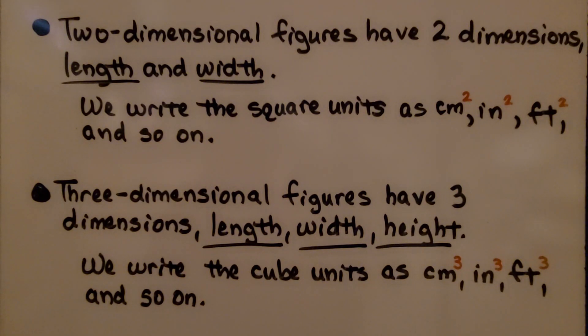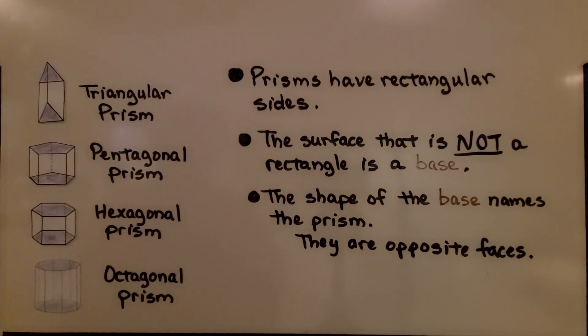Three-dimensional figures have three dimensions: length, width, and height. We write the cube units as centimeters cubed, inches cubed, feet cubed, and so on. Prisms have rectangular sides.